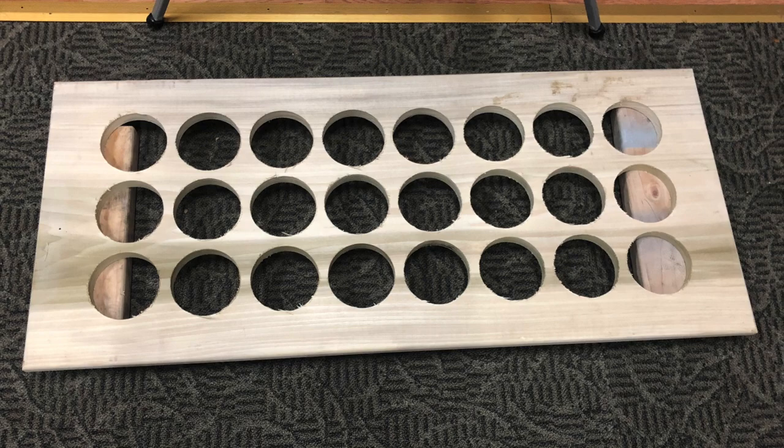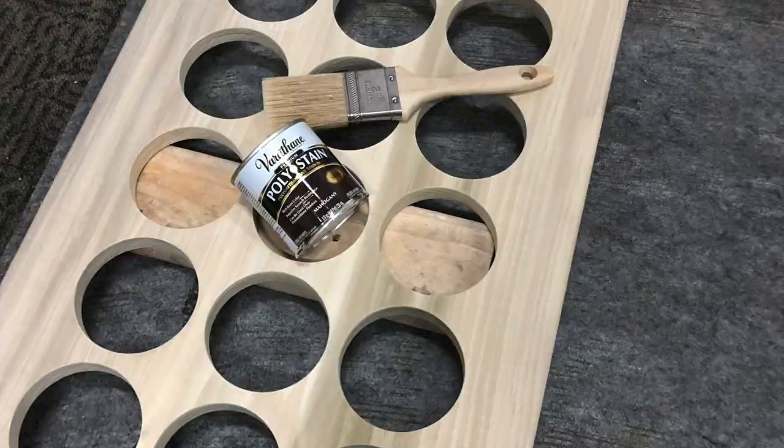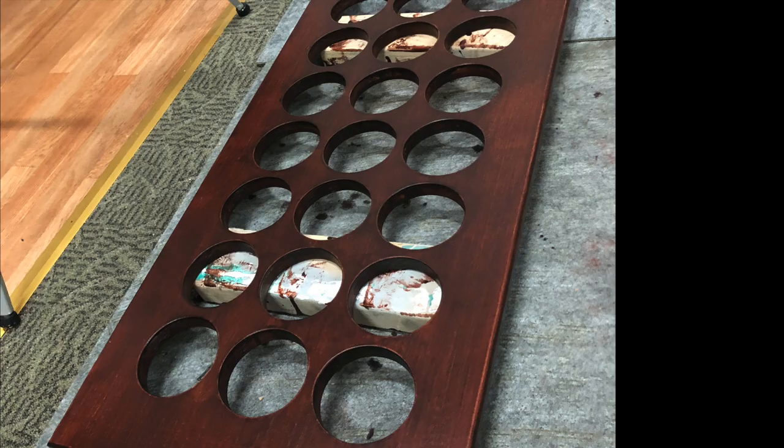A bit later we had a board with 24 holes in it. However, the hole saw tore up the edges a little bit, so we had to go in and sand each hole. Next it was time to paint the panel, and I opted to use an all-in-one polyurethane and stain from Varathane in a mahogany finish. While that was drying, it was time to go ahead and get started assembling some clocks.